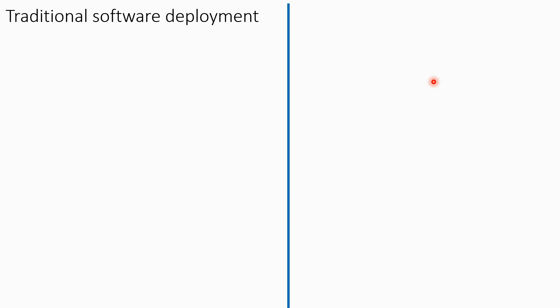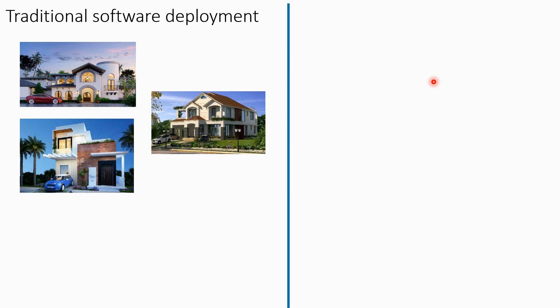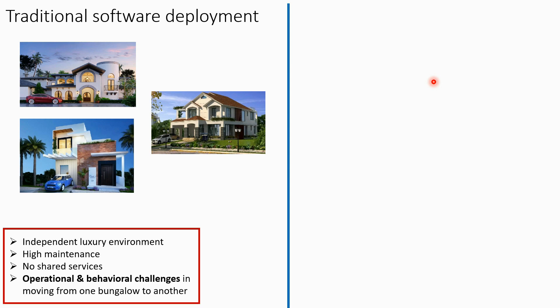Traditional software deployment is very much analogous to the housing system around us. Imagine traditional software deployment as independent bungalows. The person living inside has an independent, luxury environment. However, there is high maintenance involved. There are no shared services — if the number of people is less, the bungalow will be underutilized, and if more, it will be overutilized. And if you ask a person to shift from one home to another, there are always operational and behavioral challenges, because nobody wants to leave their luxury.